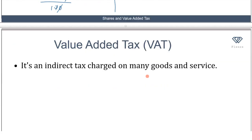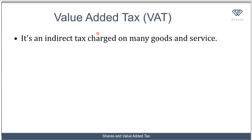Now let's talk about value added tax. Tax is a way in which the government generates revenue. There are direct taxes, where you pay money directly to the government, and indirect taxes, where the tax is placed on goods and services you purchase — you are still paying the tax to the government indirectly. We are going to focus on value added tax, which is a type of indirect tax charged on many goods and services.